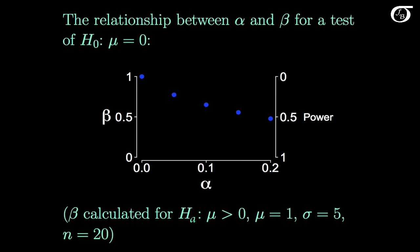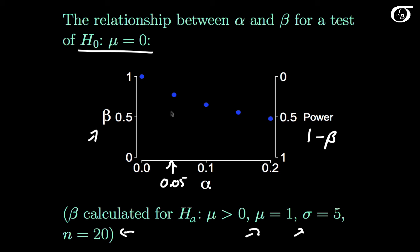Let's take a look at the relationship between alpha and beta for a test of the null hypothesis that mu is equal to 0. To calculate beta I had to make a decision on a few of these quantities, and I show how to actually calculate beta in another video. For now let's focus on the relationship between alpha and beta. Over here I put in the power, which is simply 1 minus beta. If we chose the common alpha value of 0.05, we'd see that the corresponding beta value is 0.77. So the probability of a type 2 error in this scenario is 0.77, and the corresponding power of the test is 1 minus that, 0.23.